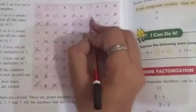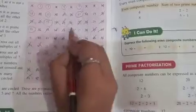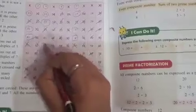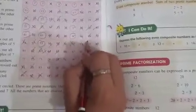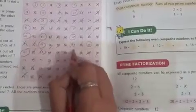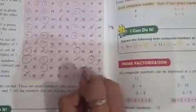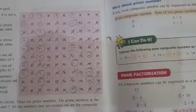Now the rest of the numbers that are left, I will put a circle on them: 7, 11, 13, 17, 19, 23, 29, 31, 37, 41, 43, 47, 53, 59, 61, 67, 71, 73, 79, 83, 89, 97. The circled numbers are our prime numbers between 1 to 100.